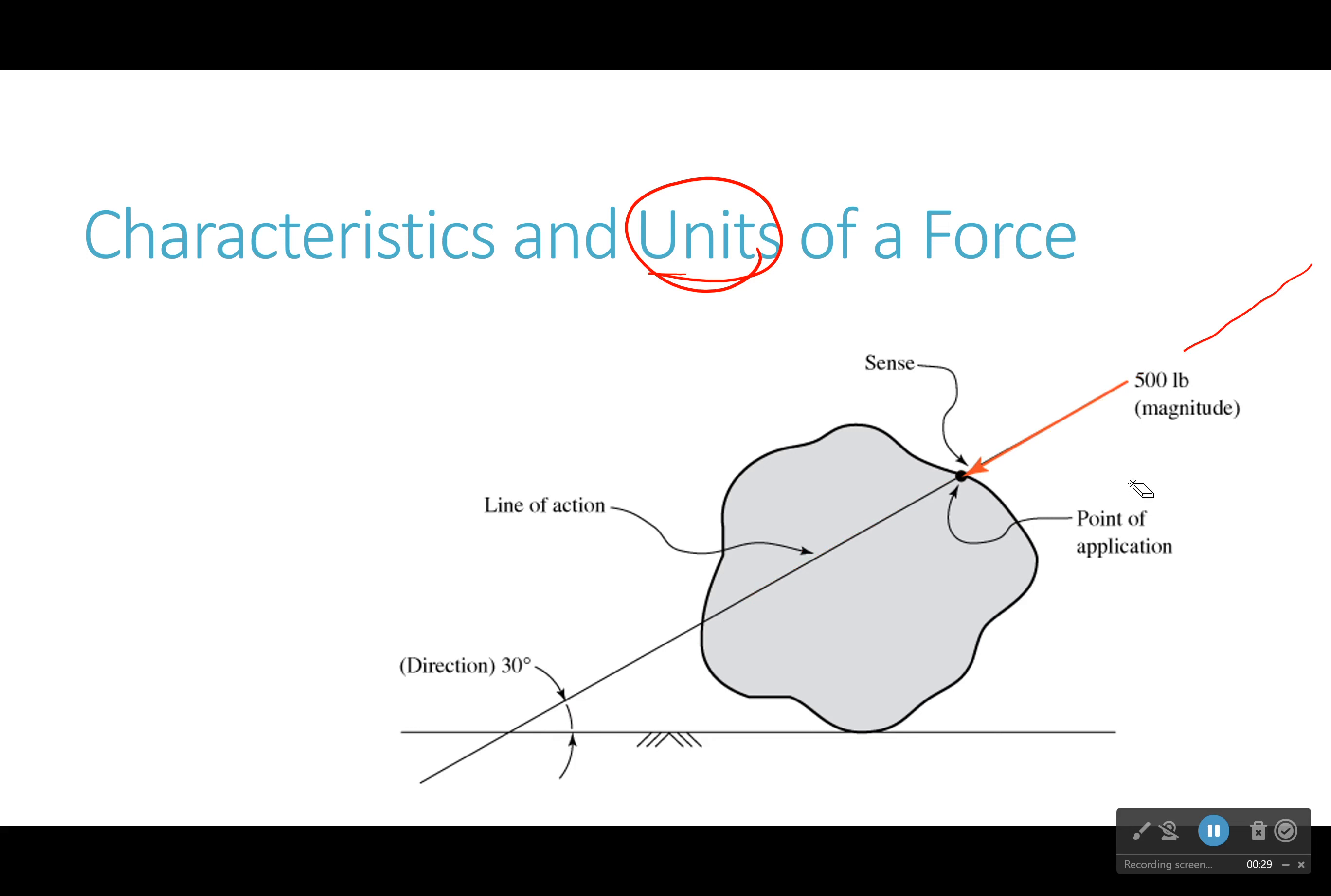It's going to be very important when we start calculating moments, which we'll learn about later. The sense is saying what direction is it pointing? Is it going away from this point or towards that point? In this case that arrowhead helps me. The point of application is where it's touching the body. Its direction is 30 degrees from something. I have to give it in response to something that doesn't change, so in this case it's the ground. Its magnitude is how hard it's pushing and it's sometimes shown by the length of an arrow, but not always. That's 500 pounds.